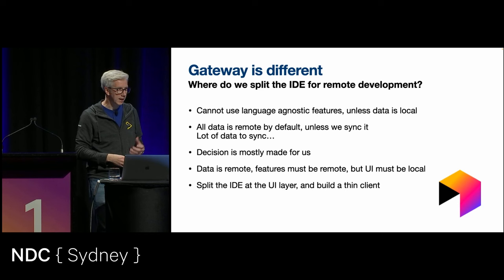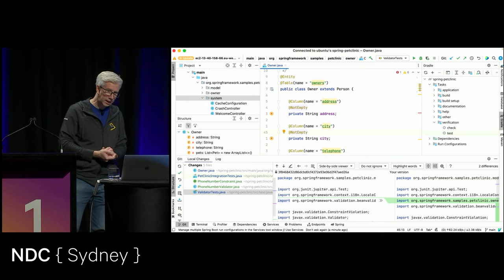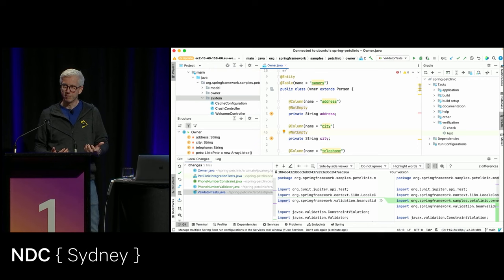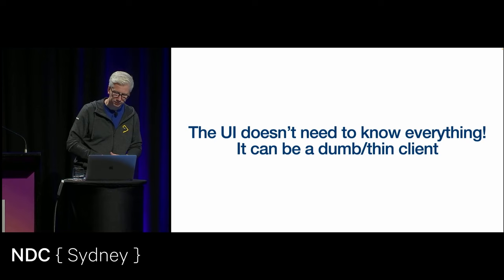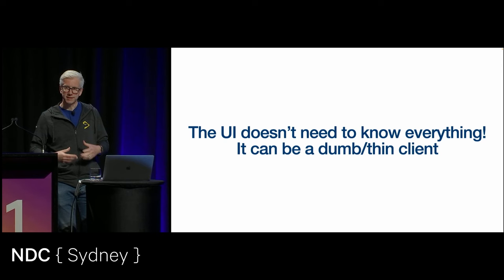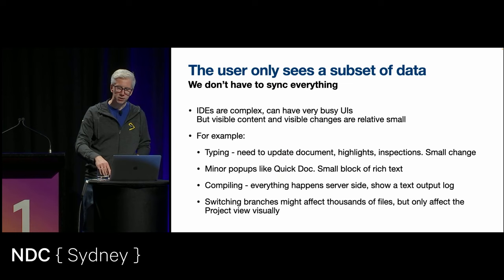This forces a decision: the split has to be done differently to Rider. The data is remote, therefore the features have to be remote — they have to work where the data is. All data, all features, and all functionality have to be remote, but the UI itself has to be local. The UI has to be a thin client. We split the IDE at the UI layer and build a thin client. We don't get to reuse the foundations and functionalities in the IntelliJ platform — like version control, web tooling, databases — but that's your IDE and it's quite a complex beast.